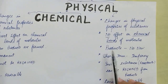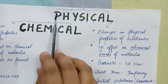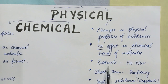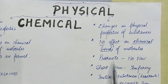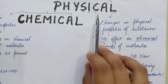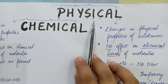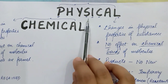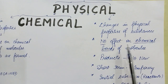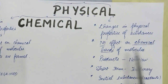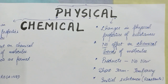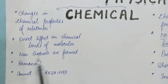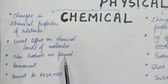The third difference is taken from the first alphabet of 'physical' — P. From P, always remember 'products.' No new products are formed in physical changes, because no effect takes place on the chemical bonds, so obviously no new products are formed. On the other hand, in chemical changes, new products are always formed — please remember this.